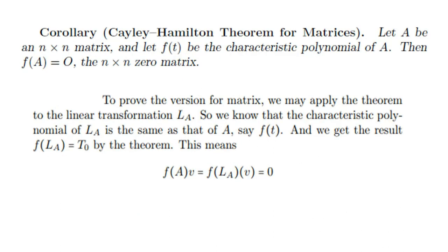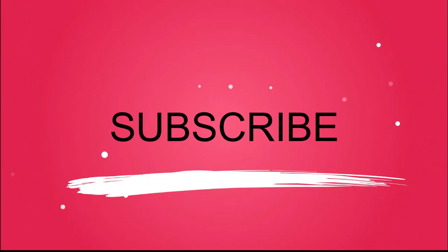Now we see the Cayley-Hamilton theorem for matrices. Let A be any n×n matrix and let f(T) be the characteristic polynomial of A. Then f(A) is the zero matrix. We apply the theorem to the linear transformation L_A. We know that the characteristic polynomial of L_A is the same as that of A, say f(T). Using the previous result, f(L_A) is the zero transformation. So f(A) applied to v equals f(L_A) applied to v, which is zero. Hence f(A) equals zero. This completes the proof. Thank you for watching this video.